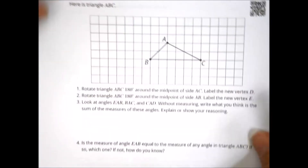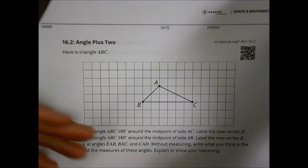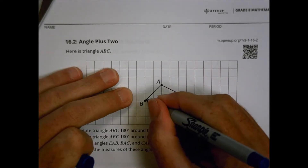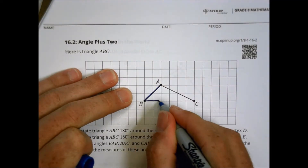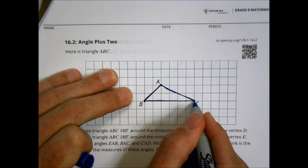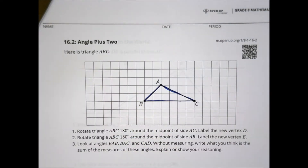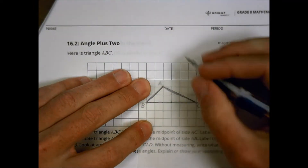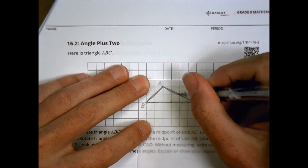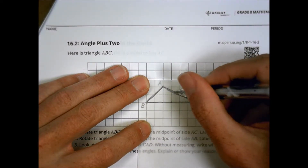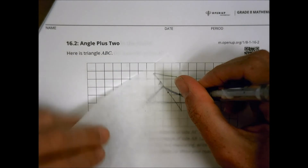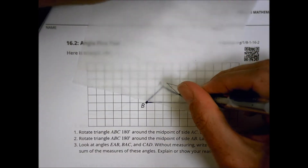One of the things you did today in class was we looked at a triangle in a section called Angle Plus 2. You took a triangle like ABC — I'll draw that here a little darker so we can see it through the patty paper. When you take that triangle and trace it with a piece of patty paper, the first thing you did in class is find the midpoint of AC. Our midpoint in this case is right here, and we rotate around that midpoint 180 degrees, snapping it into place.